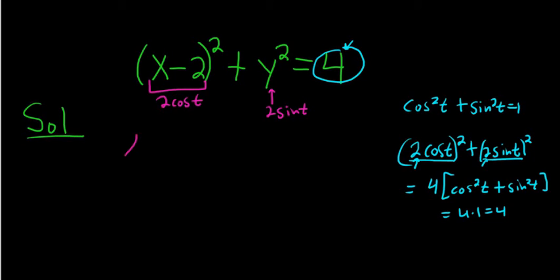Okay, so let's do it. So we have x minus 2 equals 2 cosine t. And we can solve this for x. So x would be equal to 2 plus 2 cosine t.